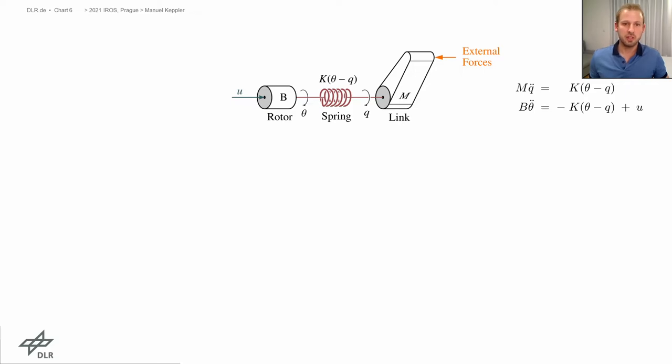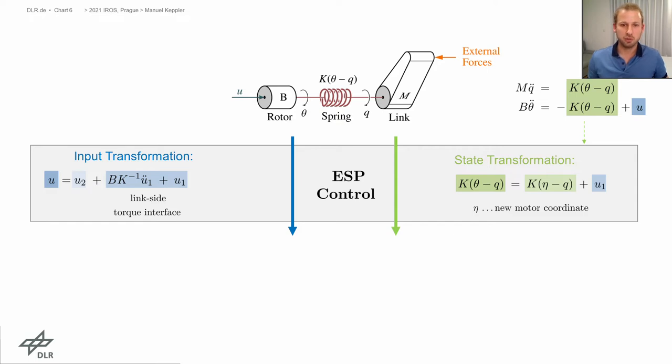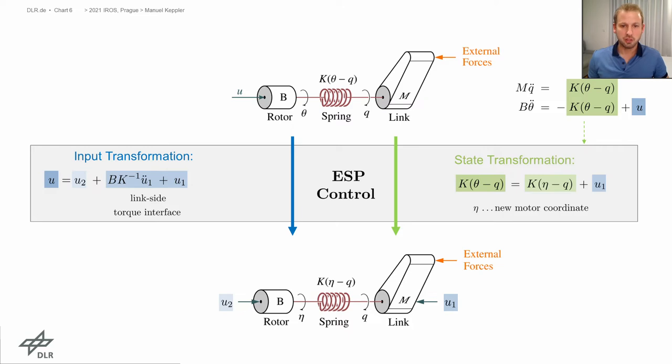Let me briefly introduce ESP control on the basis of a single elastic joint with a linear spring. Then the model is given by these two differential equations. Applying simultaneously the following state transformation, where theta_m_tilde can be considered as the new motor coordinate, and the following input transformation that relates the control input U with the virtual control inputs U1 and U2, then we have the following transformed model. Note that the structure of the series elastic joint is entirely preserved under this transformation. Clearly, the associated equations of motions have the same form as before the transformation. However, we now have an additional control input appearing on the link side, U1. This control input must obey some constraints. In particular, it must be sufficiently smooth. We can think of this transformed model as quasi-fully actuated.